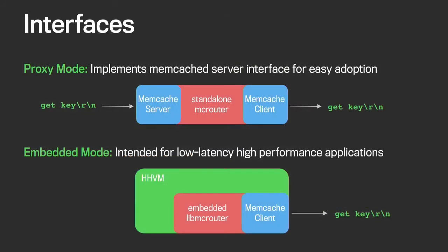There are two modes of operation. The first is a simple proxy mode — you can think of it as a drop-in proxy. There is a memcached server interface, so if your client can talk to memcached, you can talk to MacRouter instead. The second mode is the embedded mode for low-latency, high-performance applications. We use the second mode for most applications inside Facebook.